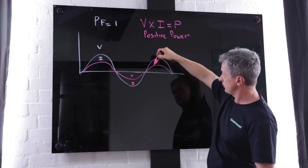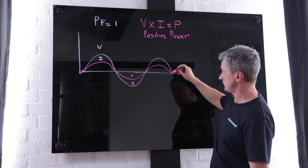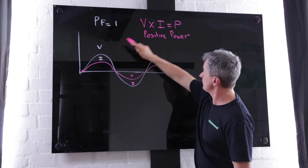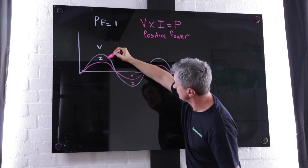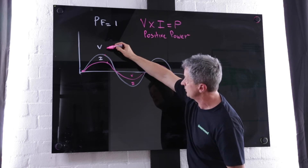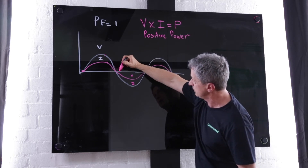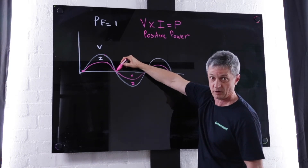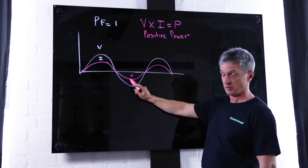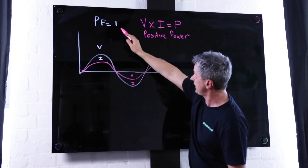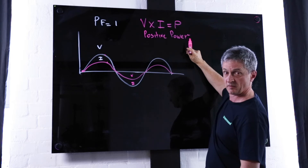At every step of the way they're totally in phase — they start at the same point, they finish at the same point. Now, V times I, voltage times current, equals power. If I take this point here: positive voltage, positive current gives positive power. Every step of the way that'll occur, apart from that microscopic point of zero. And when I go into negative — two negative numbers multiplied together give you a positive number. So when you have a power factor of one, positive power is continuous. There is no negative power.